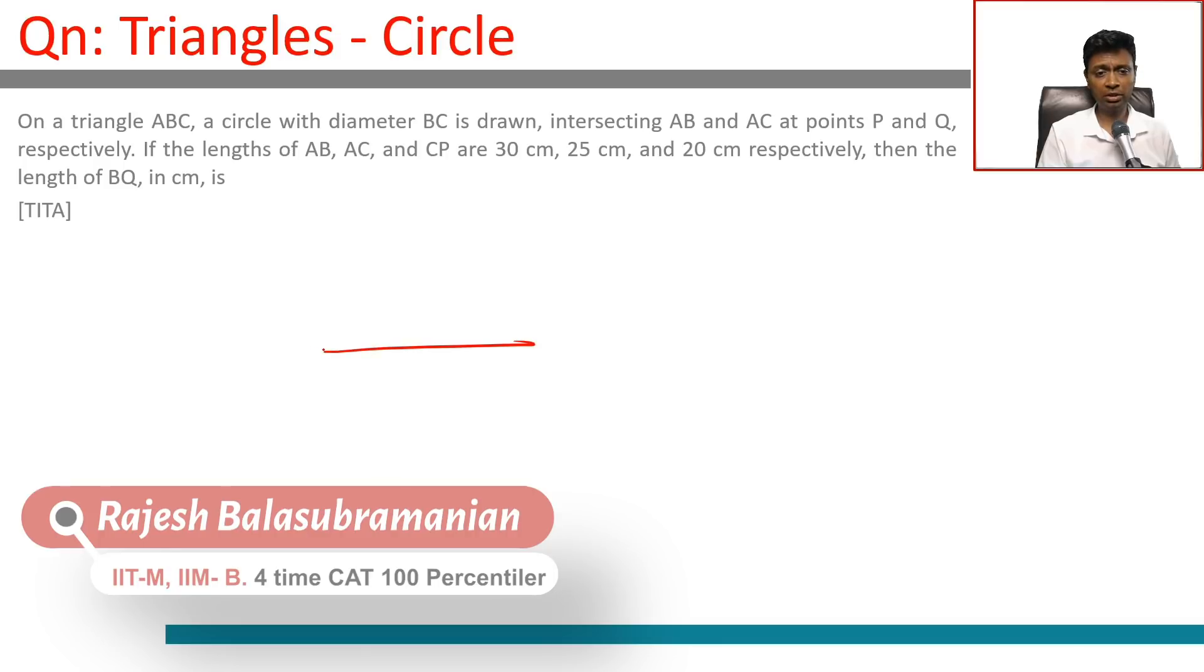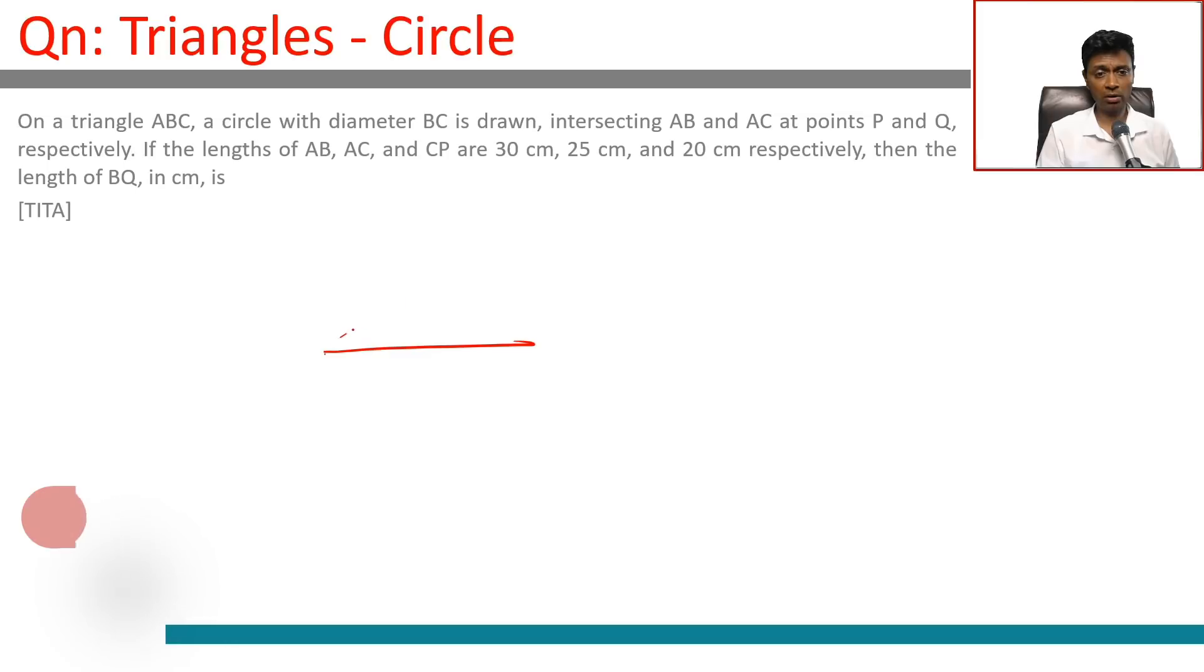So ABC. Let's say this is BC. It's A here. ABC. We're drawing a circle with diameter BC. Draw a circle like this.